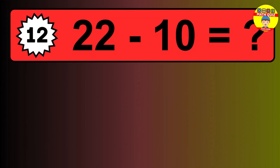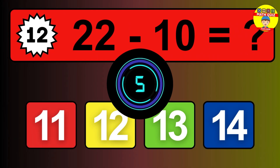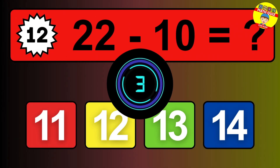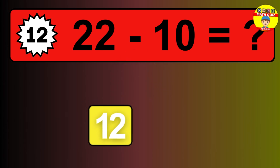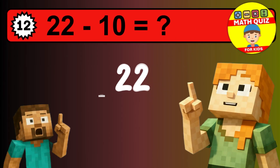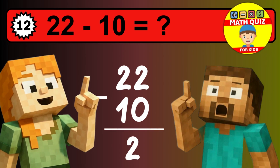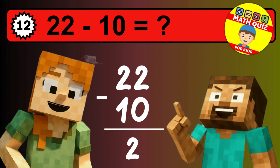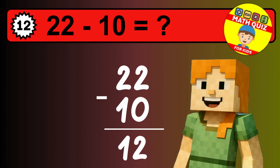What is 22 minus 10? Time to think. Let's solve this step by step. We start with the units: 2 minus 0 is 2. Then we go to the tens: 2 minus 1 is 1. The final answer is 12.